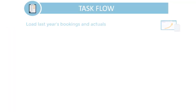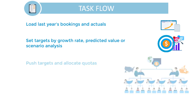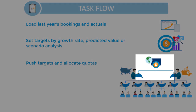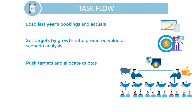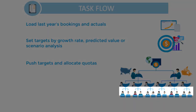To get started, have an administrator load last year's bookings and actuals. Then set targets based on a year-over-year growth rate using predictive planning values or the result of a scenario analysis. Next, push targets and allocate quotas for your planning method: top-down, to allocate downwards across the organization, or top-down waterfall, to allocate downwards level by level.